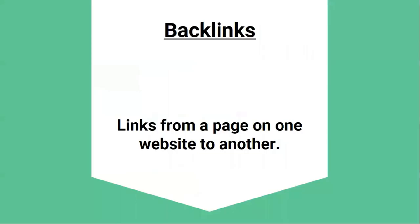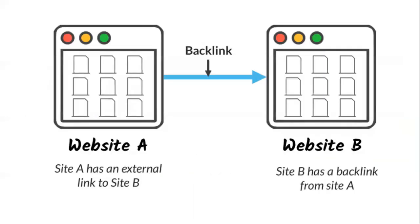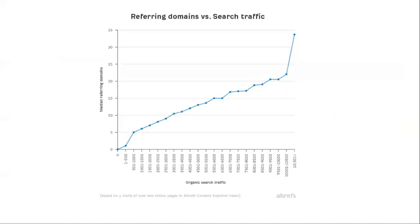First are backlinks. Backlinks are links from a page on one website to another. Google has said on their How Search Works page that if other prominent websites link to a page, that's proven to be a good sign that the information is well-trusted. The easiest way to understand the value of a backlink is to think of them as votes — when a page receives a backlink, it's essentially another website vouching for the content on that page. The more votes you get from credible sources, the higher the trust. Studies have found a clear positive correlation between backlinks from unique websites and a page's organic traffic.